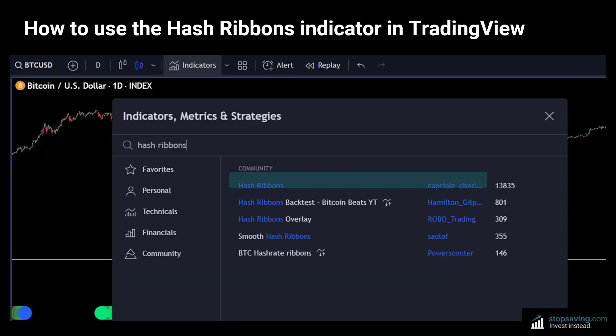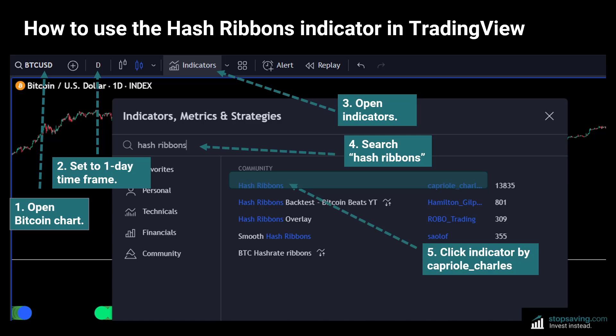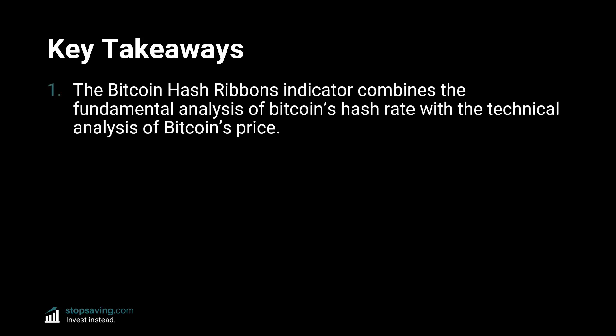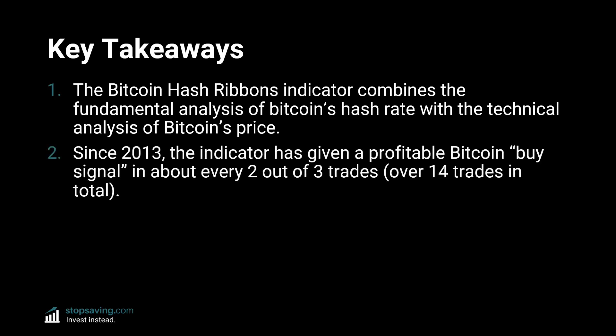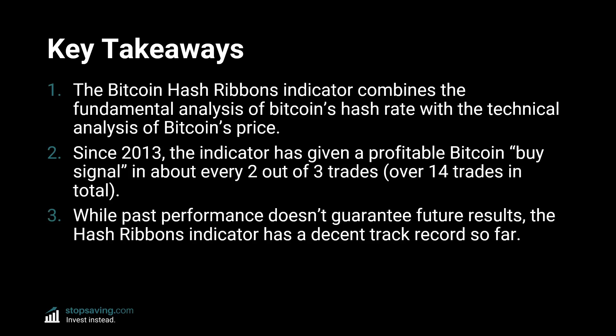If you'd like to use the Hash Ribbons indicator yourself, it's free on TradingView — just search 'hash ribbons' in the indicators section. Here are the key takeaways: number one, the Bitcoin Hash Ribbons indicator combines the fundamental analysis of Bitcoin's hash rate with the technical analysis of Bitcoin's price; two, since 2013, the indicator has given a profitable Bitcoin buy signal in about two out of every three trades, over 14 trades in total; and number three, while past performance doesn't guarantee future results, the Hash Ribbons indicator has a decent track record so far.